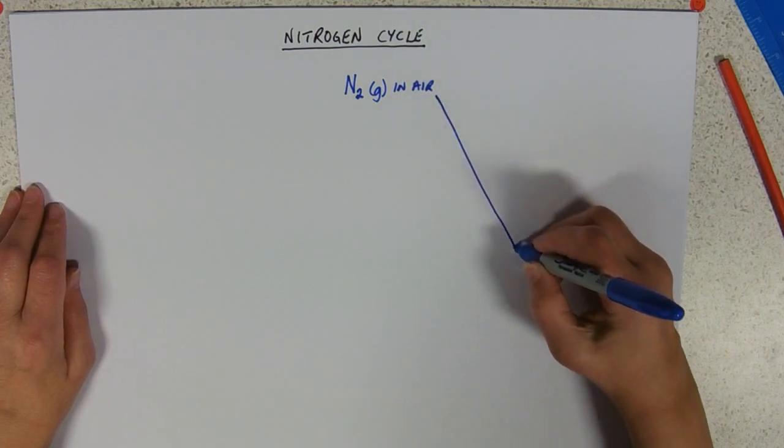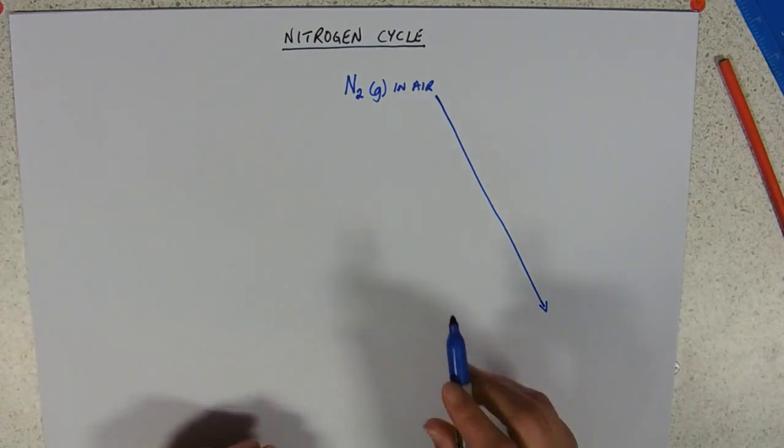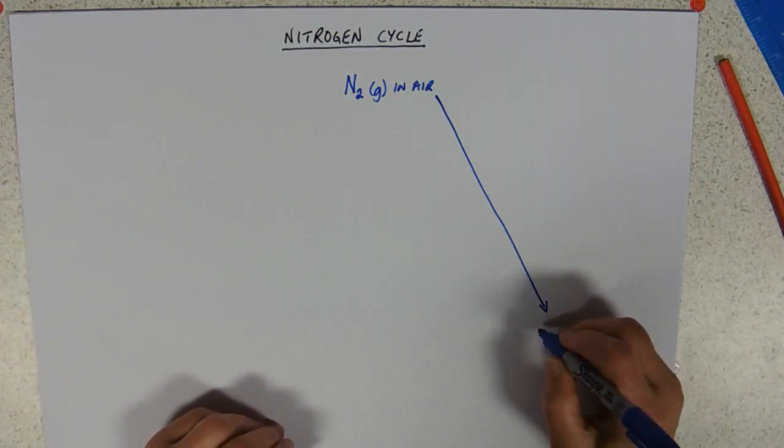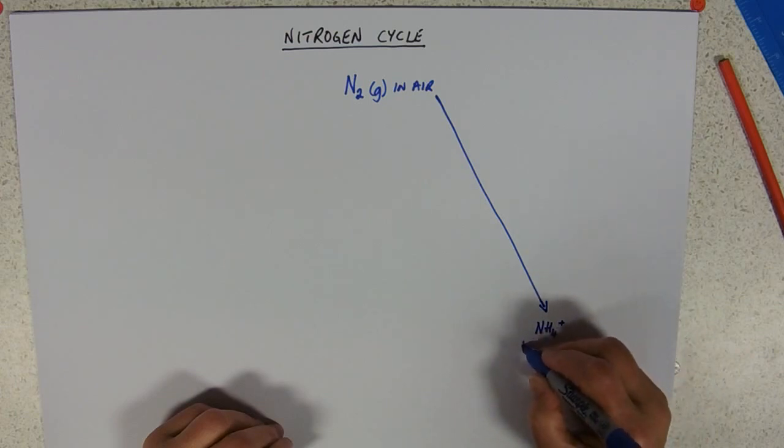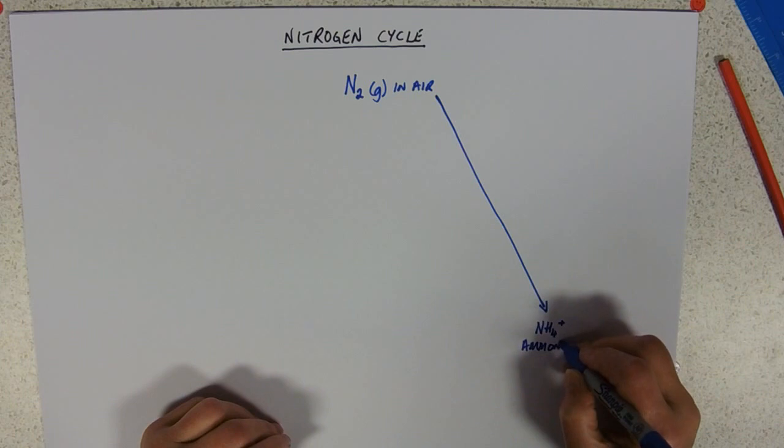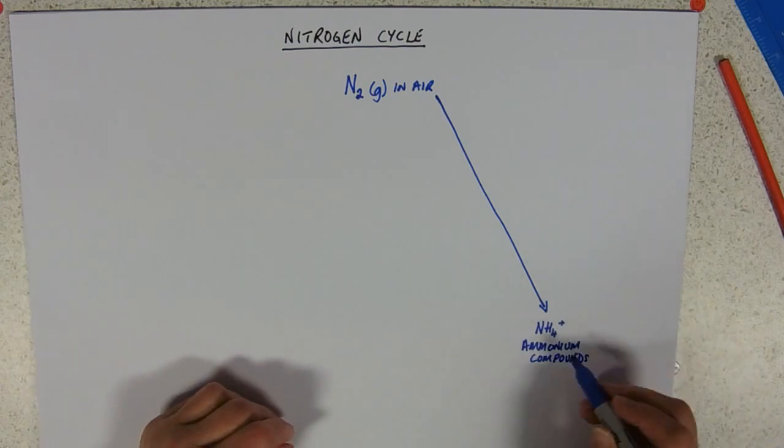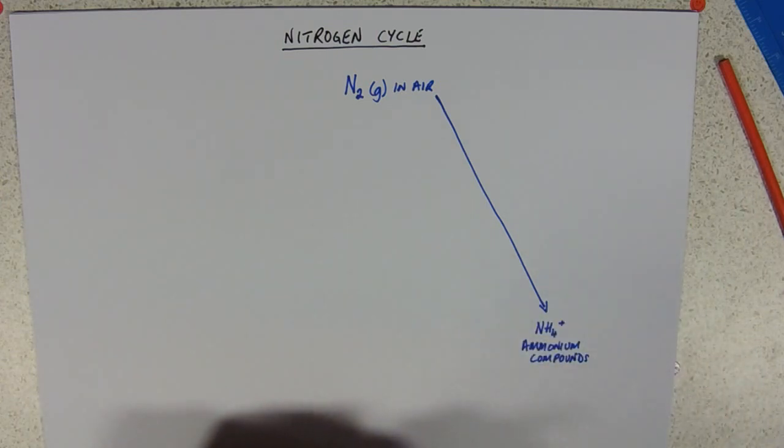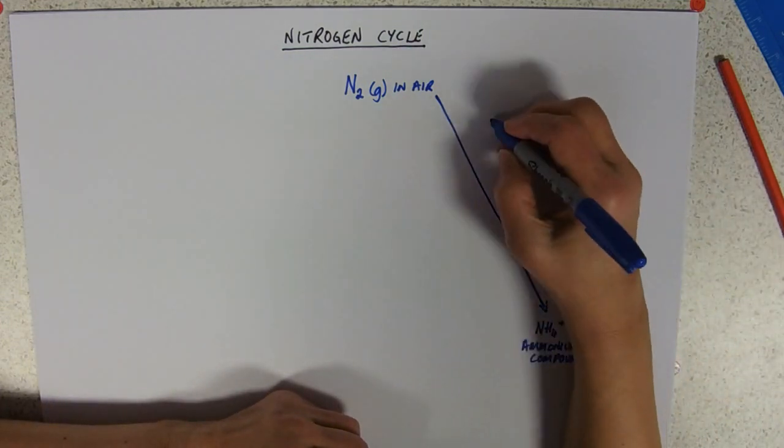What bacteria do, and again it's particular sorts of bacteria, is they take the nitrogen gas in the air and they fix it into ammonium compounds. So there we've got our ammonium compounds. This is still inorganic. And you do need to know the two bacteria, the two types of bacteria that do that.